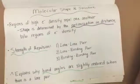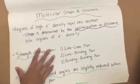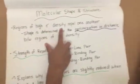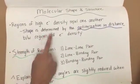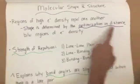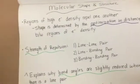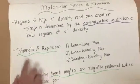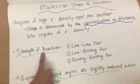When dealing with molecular shape and structure, it's important to remember that regions of high electron density repel one another. Thus, the shape is determined by the optimization in distance between regions of electron density. One thing to keep in mind are the varying levels of the strengths of repulsion.